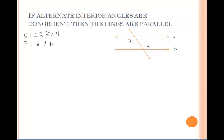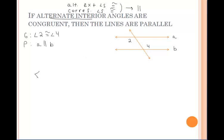Out of all the theorems that we just wrote down, I want us to prove this theorem in particular, which states that if alternate interior angles are congruent, then the lines are parallel. This theorem is the building block to prove the other theorems true — we would use it to then say if alternate exterior angles are congruent, then the lines are parallel, or if corresponding angles are congruent, then the lines are parallel.